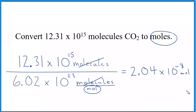That's it, really. That's how you convert from molecules of CO2 to moles — because we're going from molecules to moles, we divide by Avogadro's number. This is Dr. B. Thanks for watching.